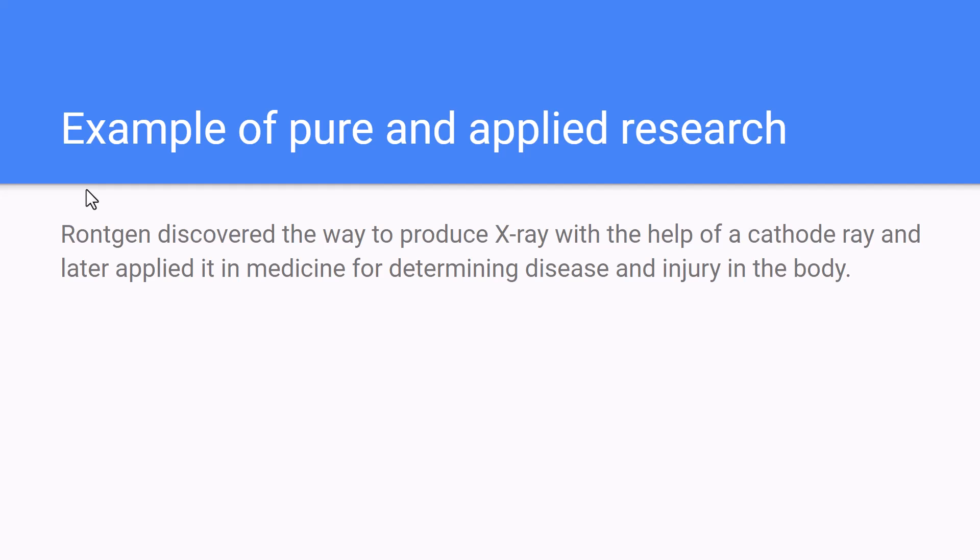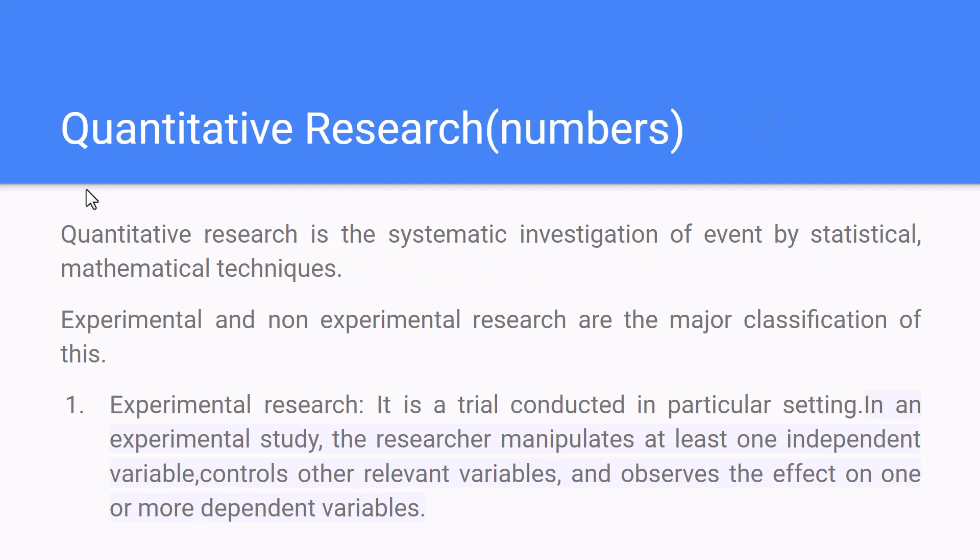The next type is quantitative research. 'Quantity' refers to numbers, so quantitative research is the systematic investigation of phenomena using statistical and mathematical techniques. Quantitative research is further classified into experimental and non-experimental research.